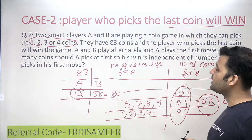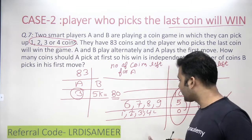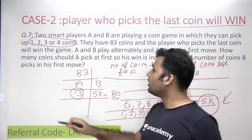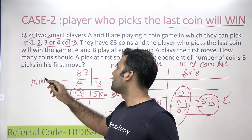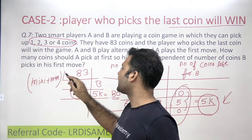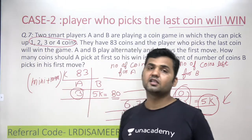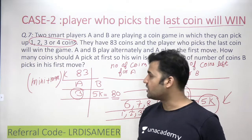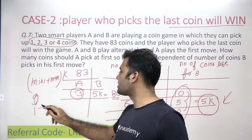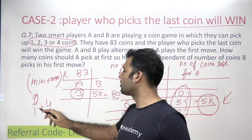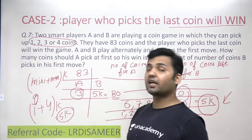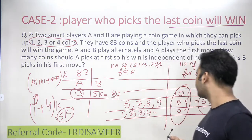Now, the direct method for solving questions where the person picking the last coin wins: the controlling factor is minimum number of coins plus maximum number of coins, multiplied by k. Here minimum is one and maximum is four, so the controlling factor is 5k. You can use this directly without deriving it step by step.